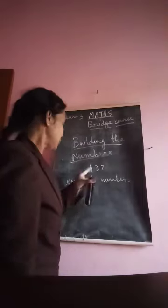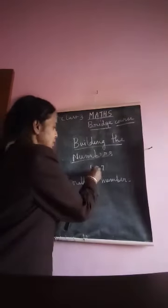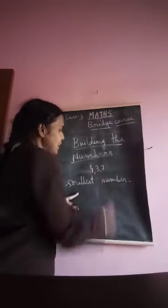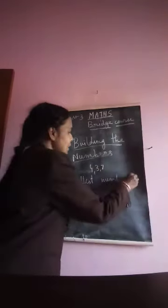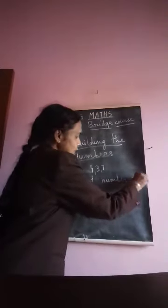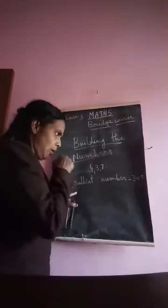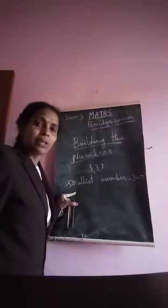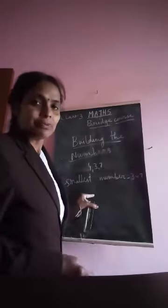Make the smallest number using digits 4, 3, and 7. First write the smallest digit — 3, then 4, then 7. So 347 is the smallest number we build using digits 4, 3, and 7.